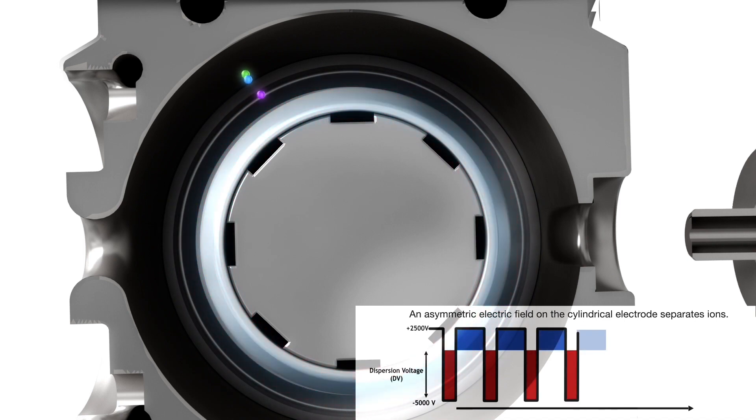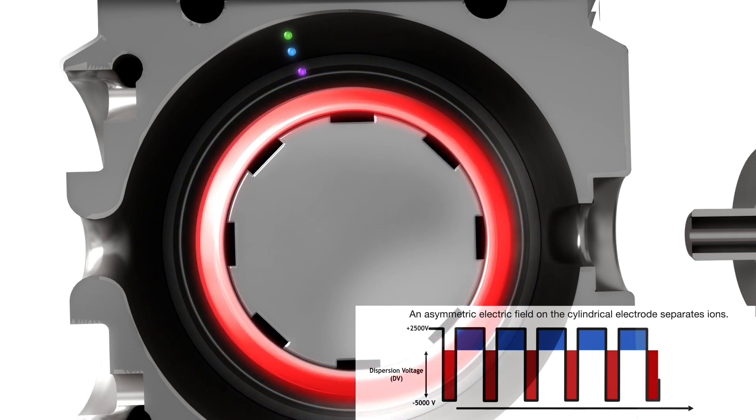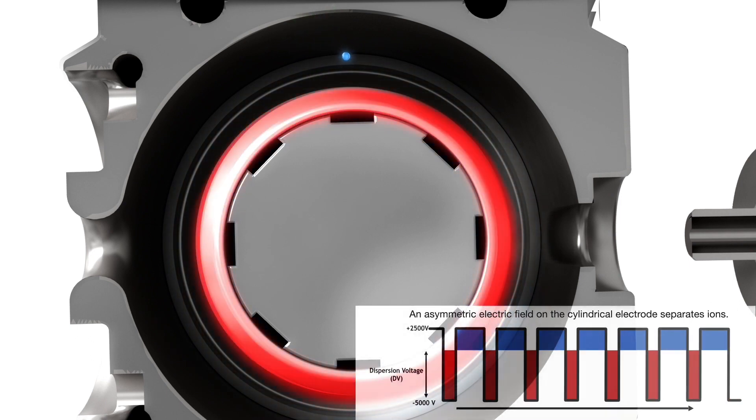Spatial dispersion is achieved by applying a high field for a short duration, pulling positively charged ions towards the inner electrode, then switching to a low field of opposite polarity for twice the duration, pushing the ions back toward their original trajectories.